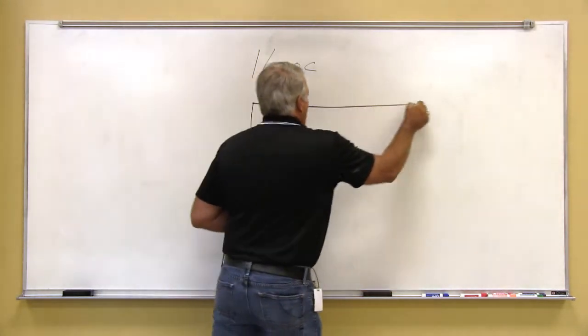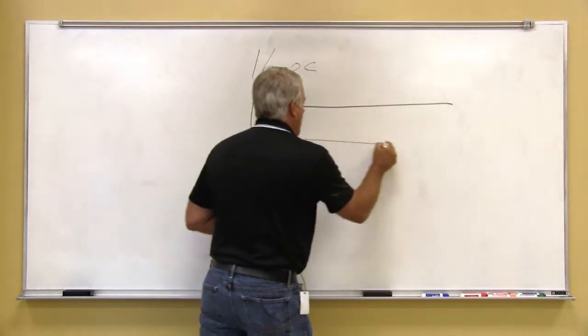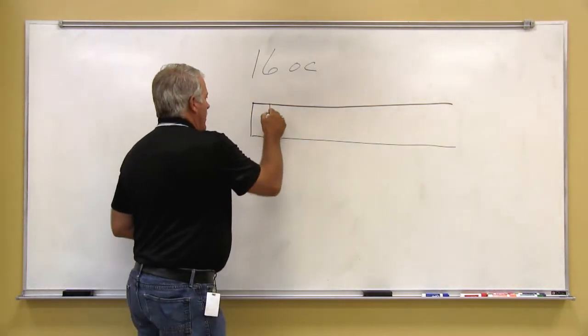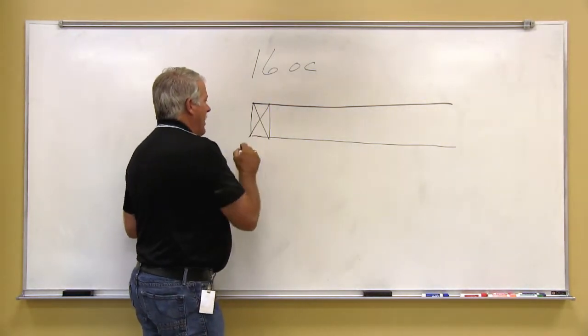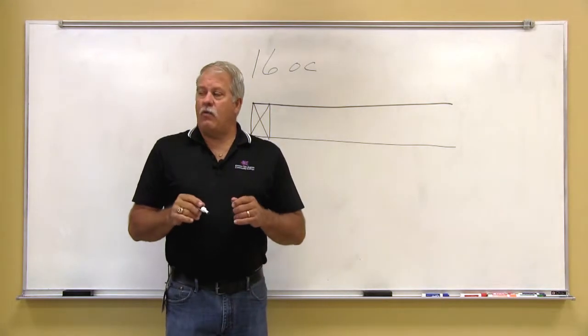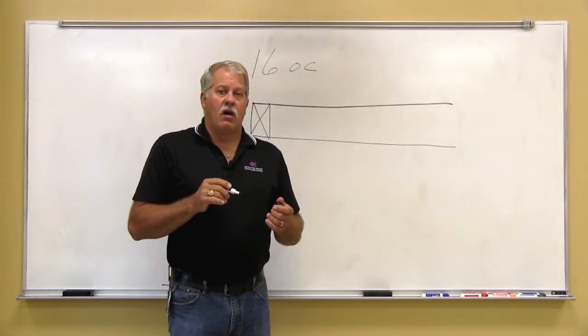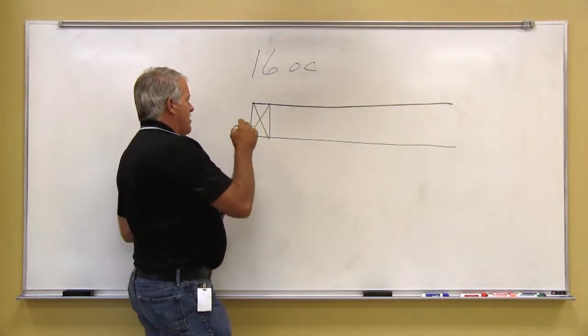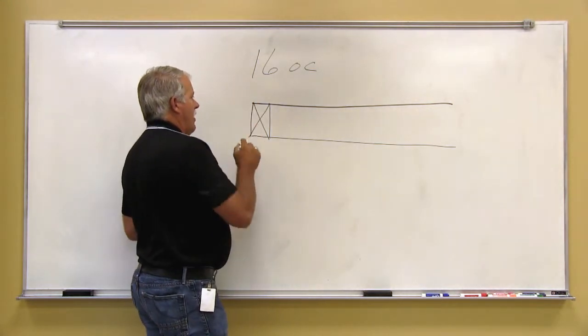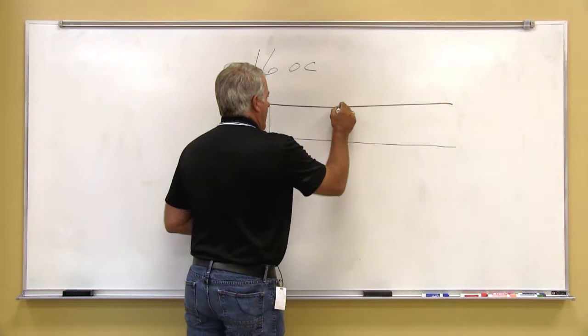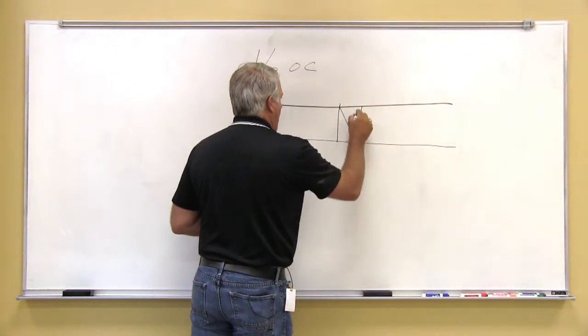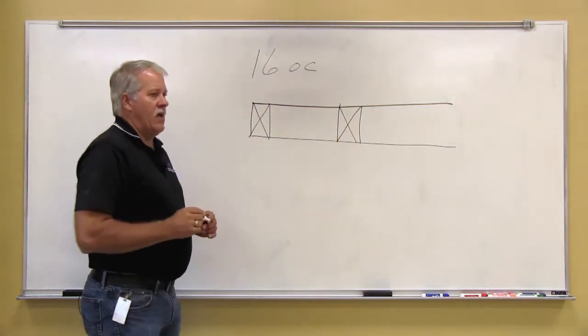When we lay out a wall, the primary purpose for the layout is so that the sheeting will fit without having to cut it on our layout. So when we have 16 inch centers, we're going to hook our tape measure on the edge of our board, and we are going to measure over so that we know what the edge of our next stud is going to be.